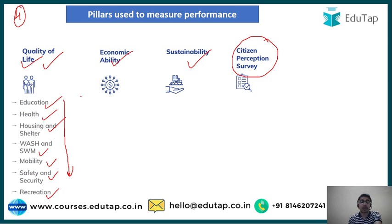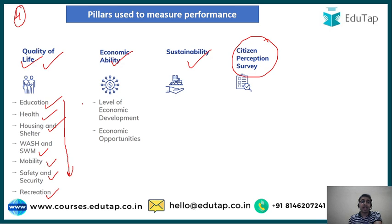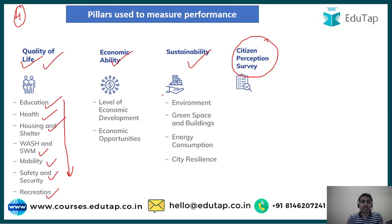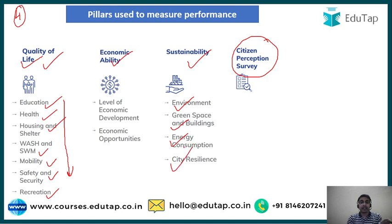The Economic Ability pillar evaluates the economic well-being of citizens, including the level of economic development and economic opportunities available in the cities. The Sustainability pillar examines the availability of a good environment — the air citizens breathe, the water they drink, availability of green spaces and buildings, energy consumption, and city resilience, which is the ability of cities to withstand natural disasters.